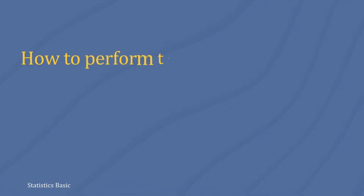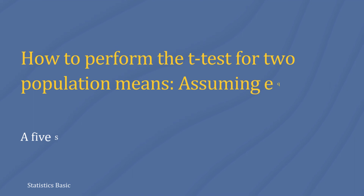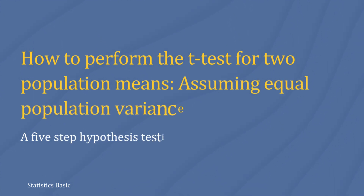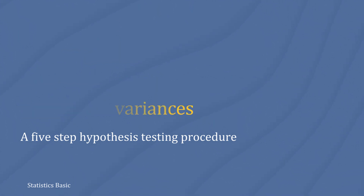In this video, we will conduct a two-sample t-test, also known as an independent samples t-test, assuming the population variances of the two samples are equal, using a step-by-step hypothesis testing procedure, and we'll walk through each step manually.